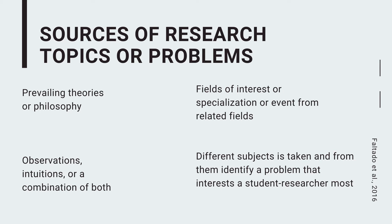Now, what are the sources of research topics or problems? Where do we get ideas about the research paper we are going to write? First are the prevailing theories or philosophies. These existing theories or philosophies can be re-examined or used as a framework for your study. Another source of research topic or problems are observations, intuitions, or a combination of both.